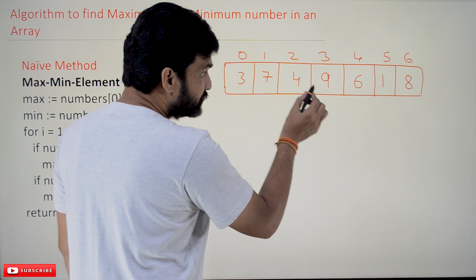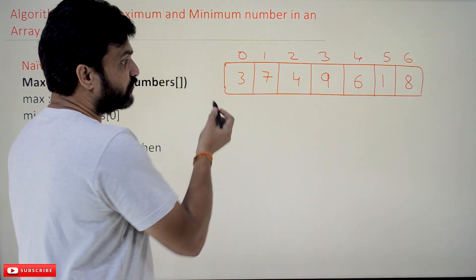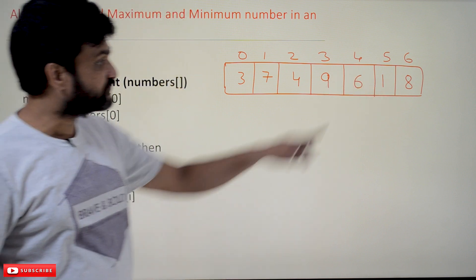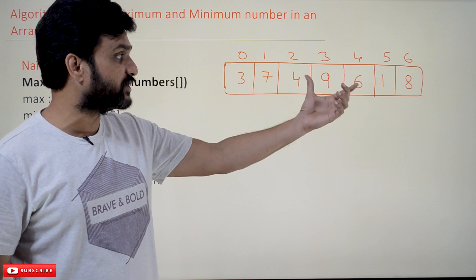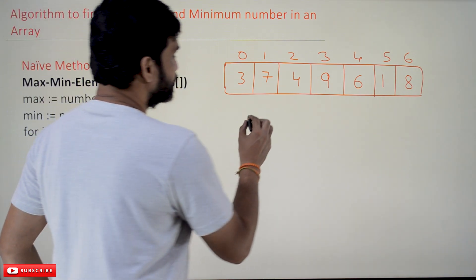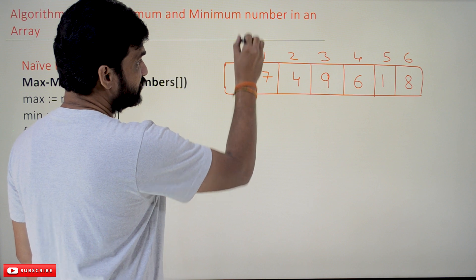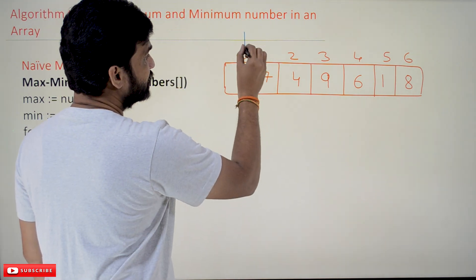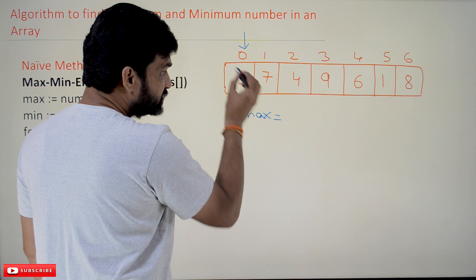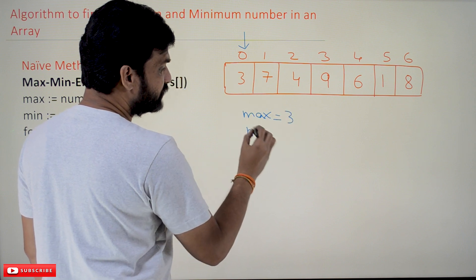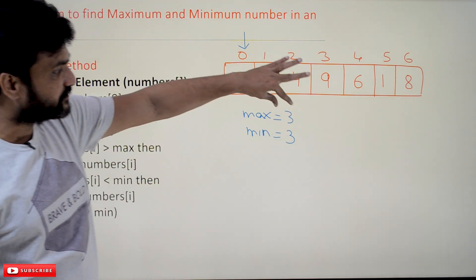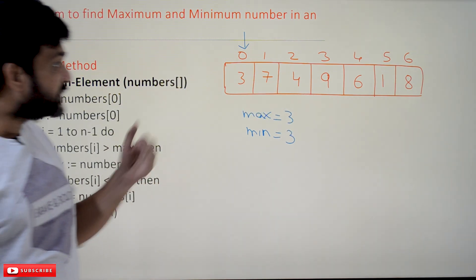The objective of this algorithm is to find the maximum element and the minimum element in this array. What is the maximum element in this array? Which is 9. And what is the minimum element of this array? Which is 1. So the output of this algorithm is going to be 9 and 1. The algorithm starts by considering the 0th element of the array as both the max element and the min element. So 3 is considered as both the max and the minimum element initially.